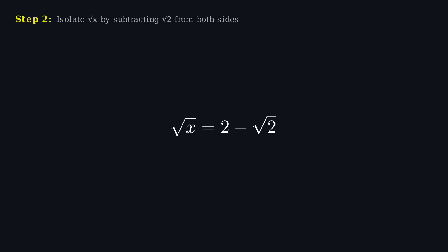Now that the √x is isolated, the next step is to get rid of the square root. The best way to do that is to square both sides of the equation. When we square √x, we're simply left with x. On the other side, we need to square the expression 2 minus √2. So, what's 2 minus √2 squared? Let's expand it.